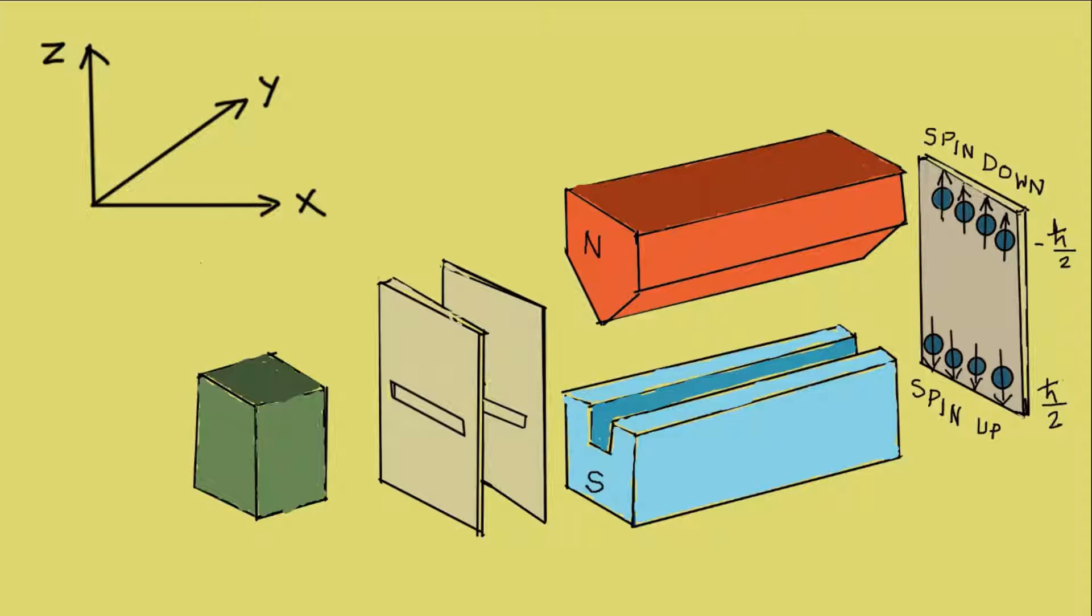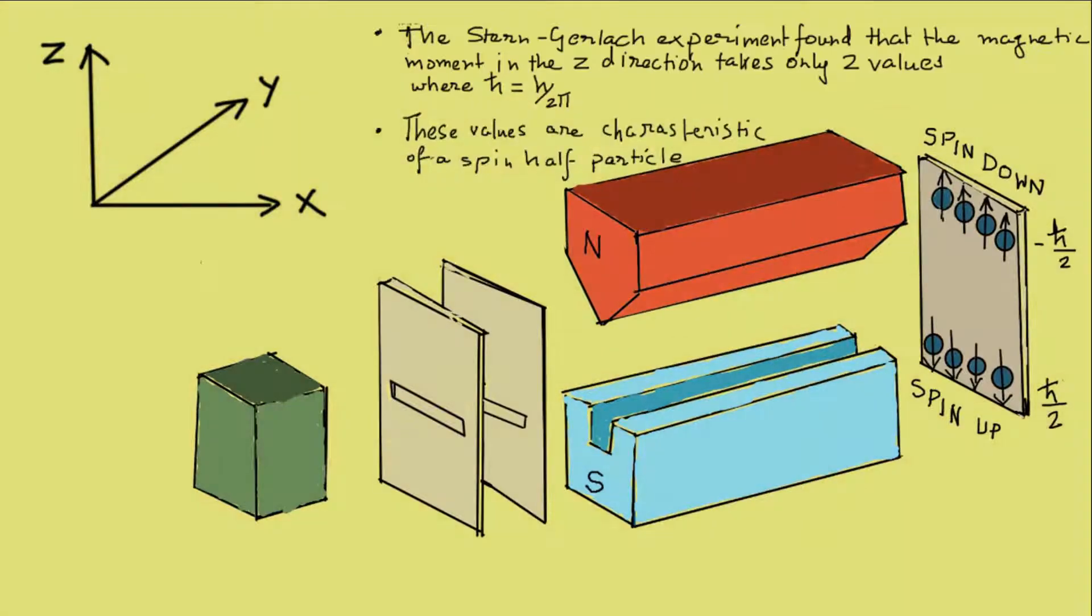Also, measuring the momentum in the z direction destroys information of its spin in the x and y direction, which is yet another quantum behavior. Though in the animation we see that there are an equal number of particles deposited on the top and bottom, this might not be the case generally.